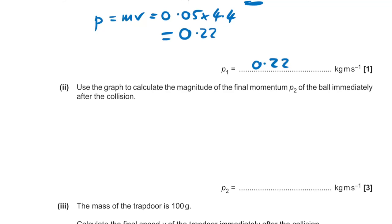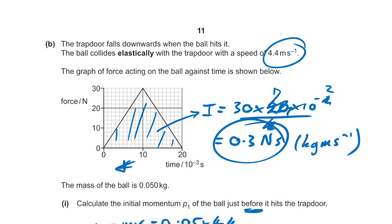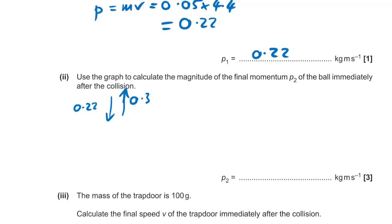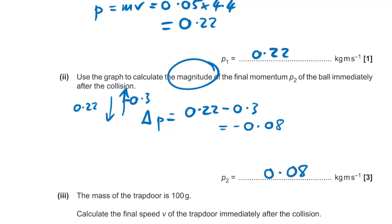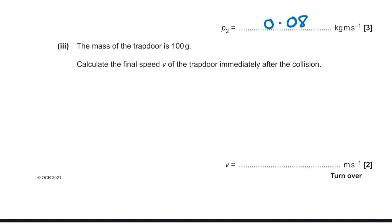Use the graph to calculate the magnitude of the final momentum of the ball immediately after the collision. The impulse of 0.3 N·s is imparted in the opposite direction. The ball was going downward with 0.22 kg·m/s, so after: 0.22 − 0.3 = −0.08 kg·m/s. The magnitude is 0.08 kg·m/s. This is easy to get wrong — read the question carefully.